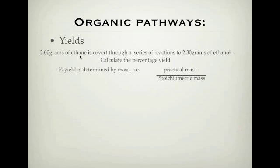We've got our reactant ethane. Let's find out the number of moles of ethane. Number of moles equals the mass over the molar mass. So it's 2 divided by 30, and you get 0.067 mol of ethane.